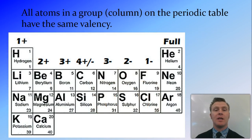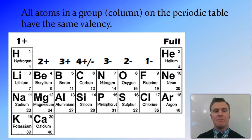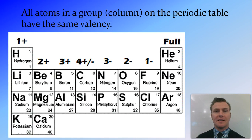Because the periodic table is arranged so that a column or group all have the same number of electrons in the outer shell, we can deduce that all the elements in a particular group or column will have the same valency. You'll also notice that on the left-hand side of the periodic table, where we find the metals, all the metals have a positive valency, while on the right-hand side, the non-metals are all negative.